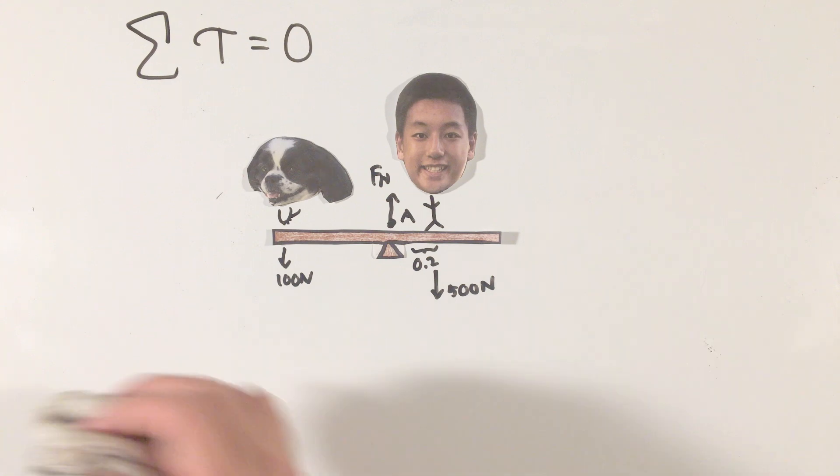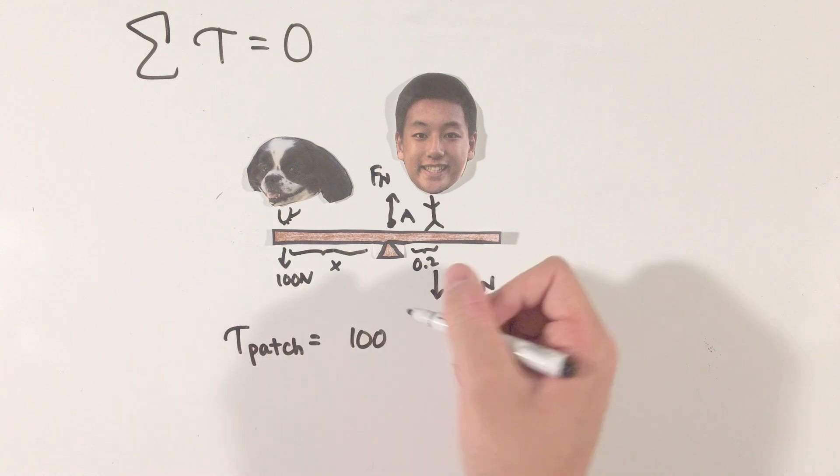After selecting a pivot point, simply equate the torques to zero. As with Jason alone, his torque will cause this seesaw to angularly accelerate due to the previously learned equation. Assuming Patch sits some distance x away from the fulcrum, he will apply a torque of 100 times x newton meters that tries to rotate this seesaw counterclockwise.